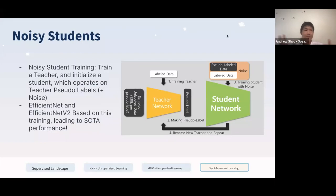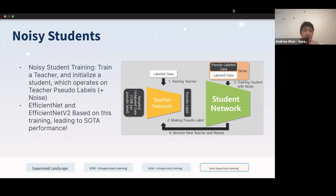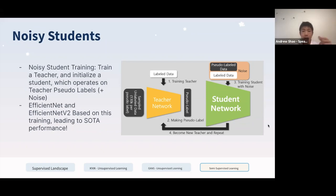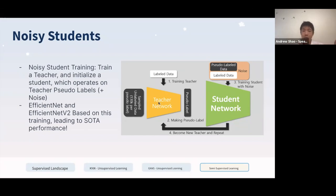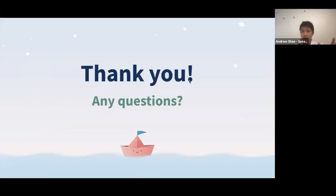The last thing I want to cover is noisy student training, which was applied to EfficientNet and EfficientNetV2. It's a semi-supervised technique where you train a simple teacher model that learns pseudo labels, and then you train an even larger student model — technically supposed to be smarter than the teacher. By using an entirely new model and applying a bunch of noise to the data, the student is able to learn a lot more general features, achieving state-of-the-art results at the time. Thanks to PyData for the opportunity to speak today — if you have any questions, feel free to leave them in Slack and I'd be happy to answer.